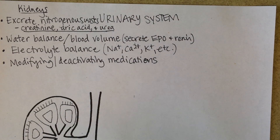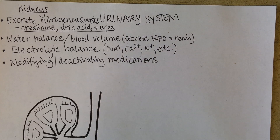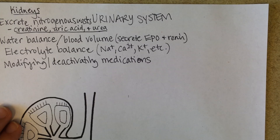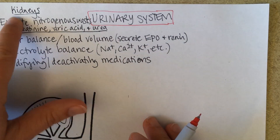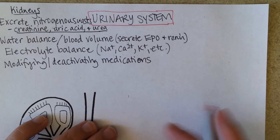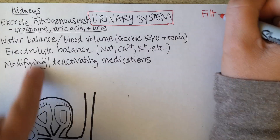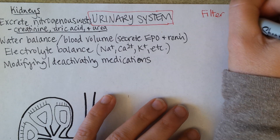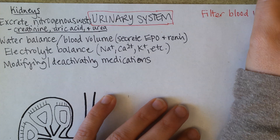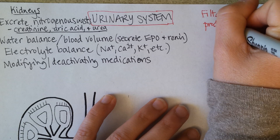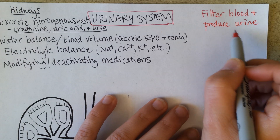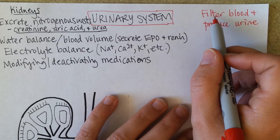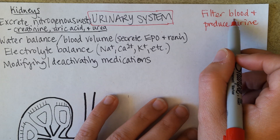Now let's use a different color pen. You can list these as four primary functions. To accomplish these things, the kidneys filter the blood and produce urine. So the wastes end up in the urine, and then the appropriate balance of fluid and salt, etc., goes back in the blood.